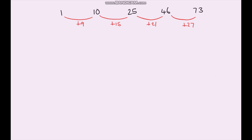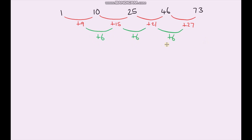Now let's work out the second difference. Between 9 and 15 we're adding 6; here we're adding 6; and here also adding 6. So the second difference is the same, meaning it's going to be n squared. The second difference is 6, so we half it — it's going to be 3n squared.